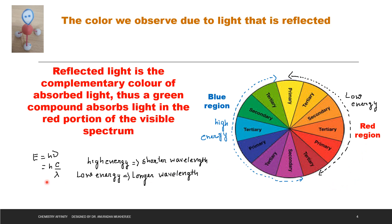We know that E equals H nu, nu equals C by lambda. So energy is inversely proportional with the wavelength. High energy means shorter wavelength, low energy means longer wavelength. The blue region is high energy, that means shorter wavelength.